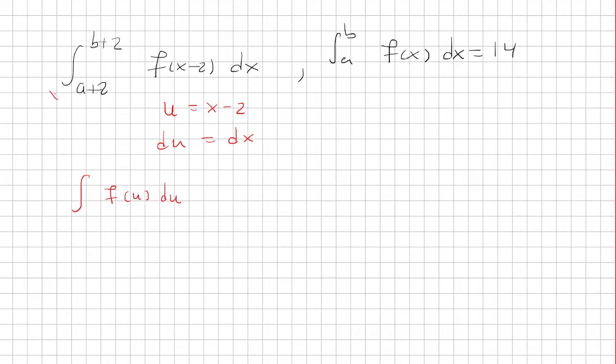Now, these limits here are in terms of x. So, x is equal to a plus 2. So, if I plug that in here, u will be a plus 2 minus 2, which is a. Similarly, if I plug in b plus 2 for x, I'm going to get b. And so, the integral from a to b of f of u du is the same thing as the integral from a to b of f of x dx, which is 14.